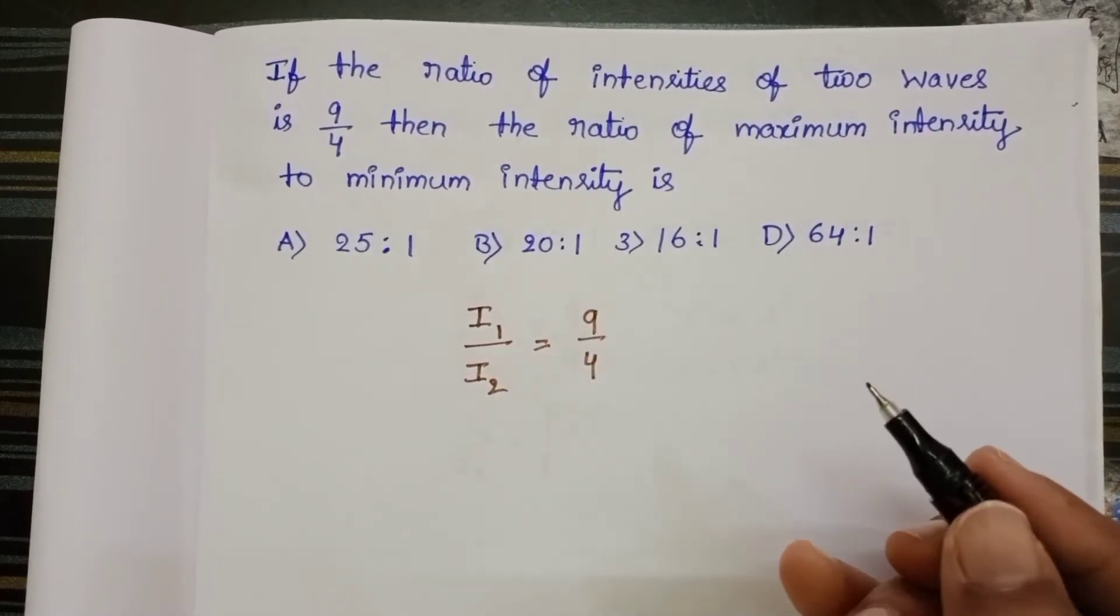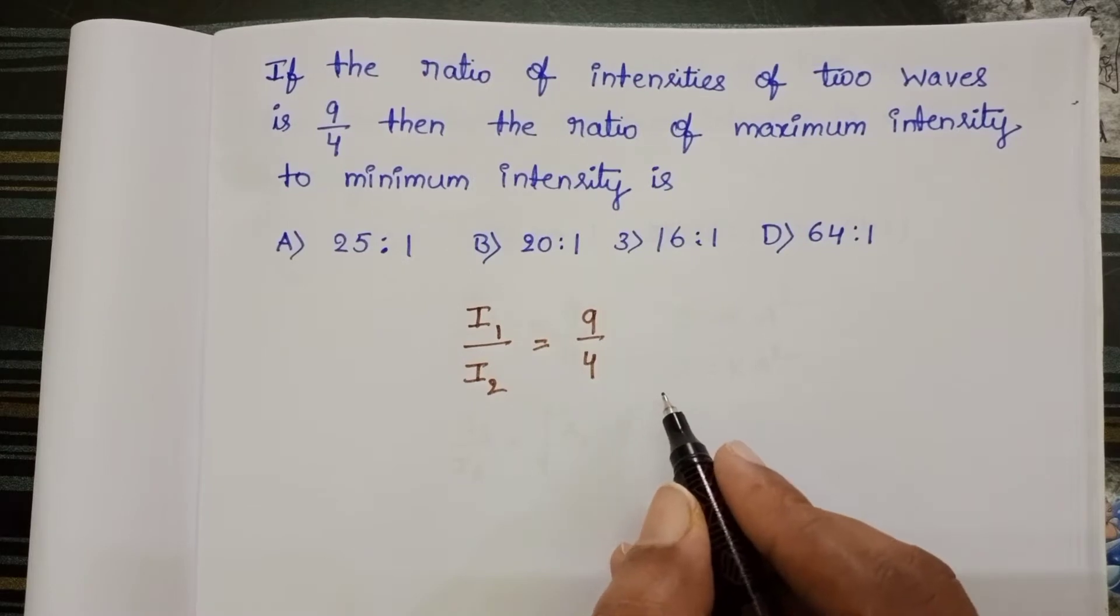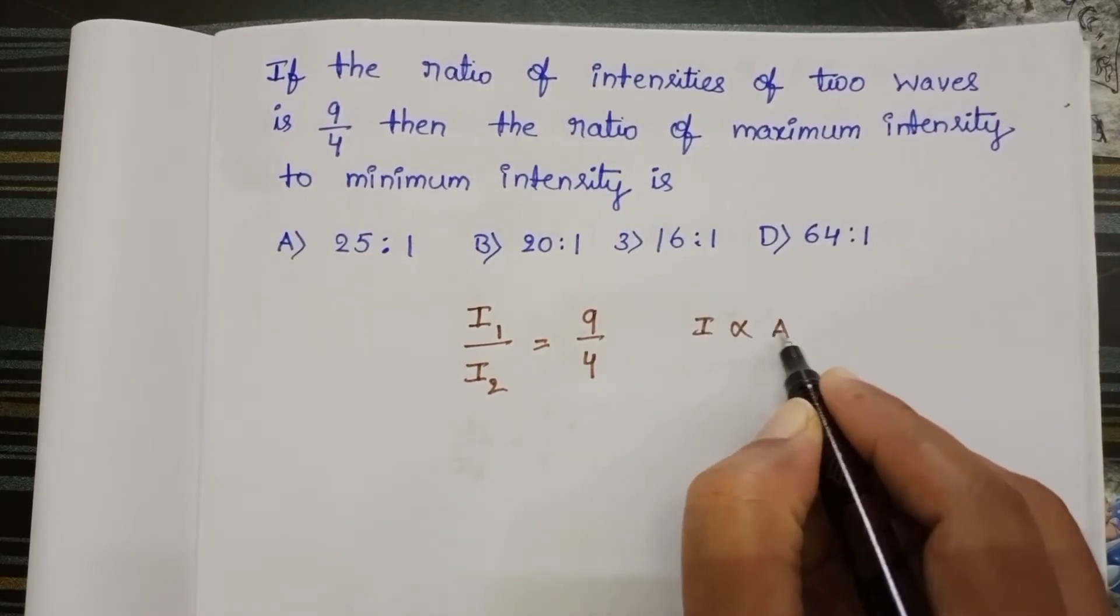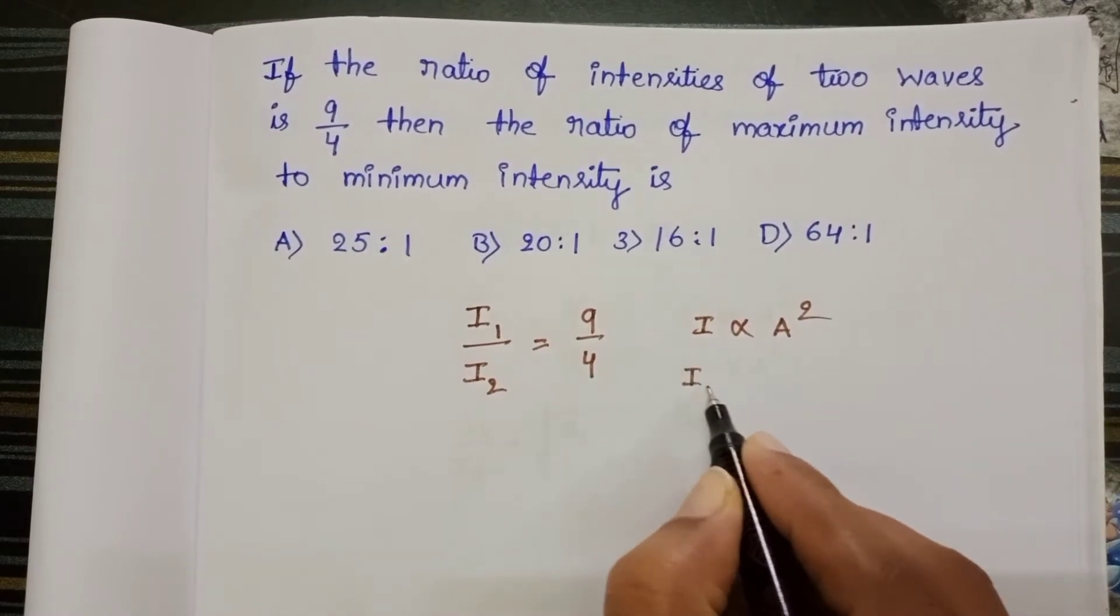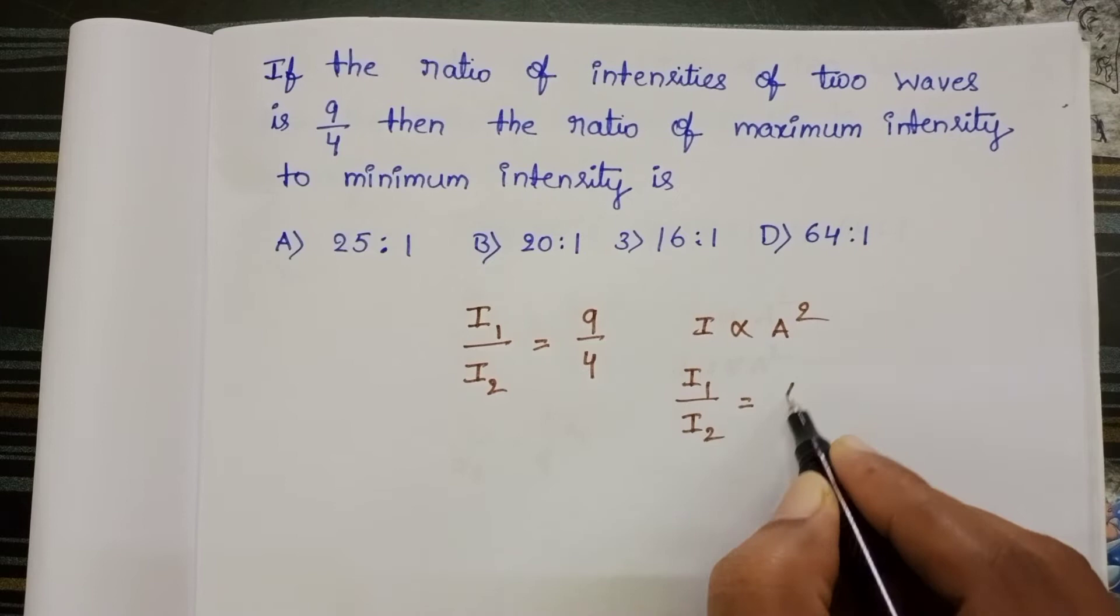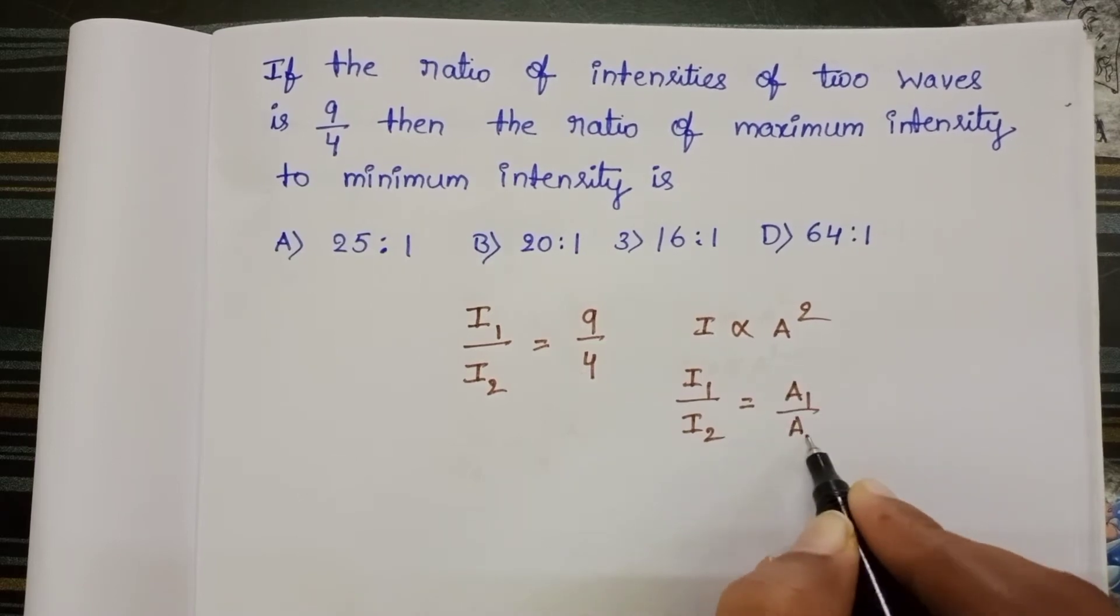The relation between intensity and amplitude: Intensity of a wave is directly proportional to square of the amplitude. So from this, I1 by I2 equals A1 by A2 whole square.